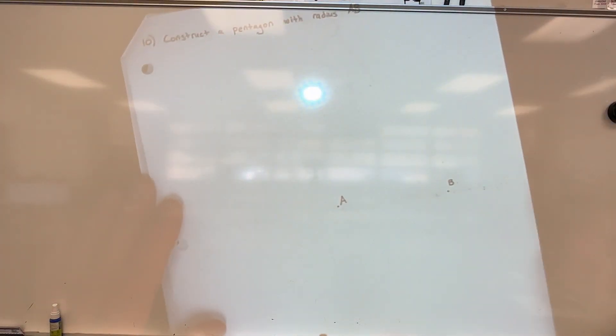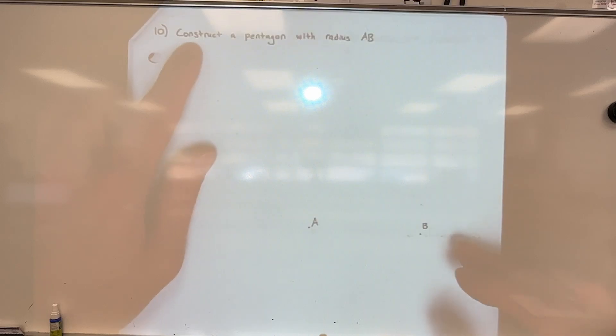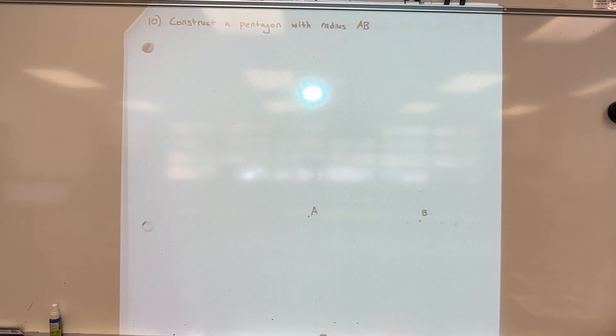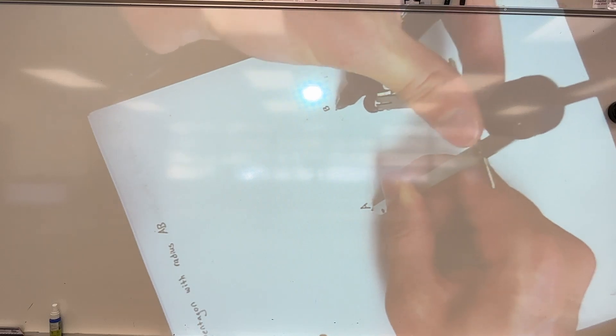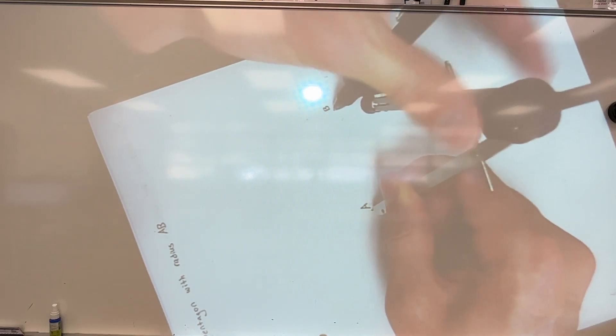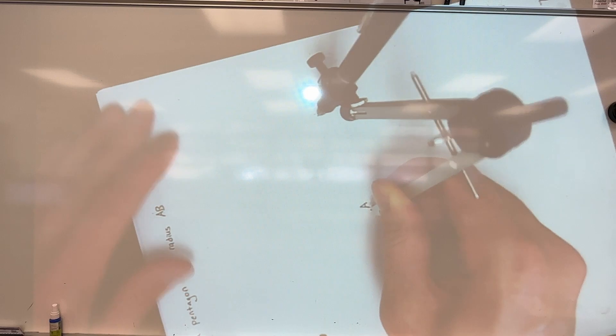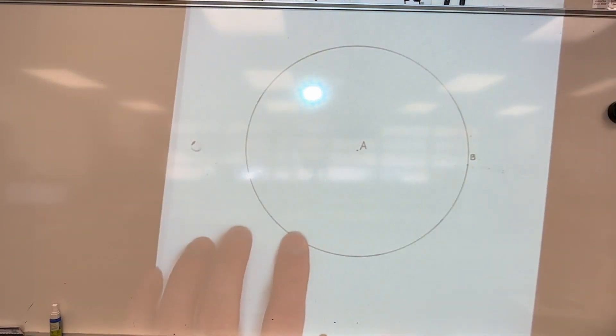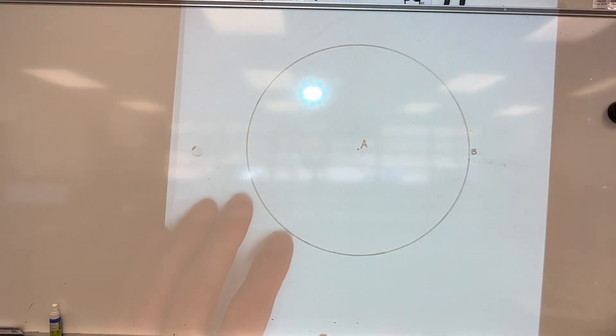Number ten: constructing a pentagon with radius AB. Measure AB with the compass and draw a full circle. I move the paper instead of the compass because it goes faster. Establish B as the top of the pentagon and draw a diameter through B and A — this is a line segment kept inside the circle. Now we need a 90-degree perpendicular bisector.